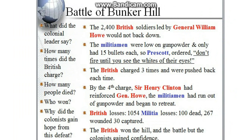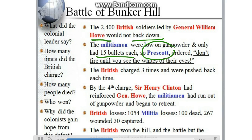The Battle of Bunker Hill. At the Battle of Bunker Hill, 2,400 British soldiers were led by General William Howe and they would not back down. Because the American militiamen were low on gunpowder and only had 15 bullets each, General Prescott ordered them, "Don't fire until you see the whites of their eyes," so that they would be close enough to make the shot, because weapons during that time period were not very accurate. The British charged up the hill three times and were pushed back each time.